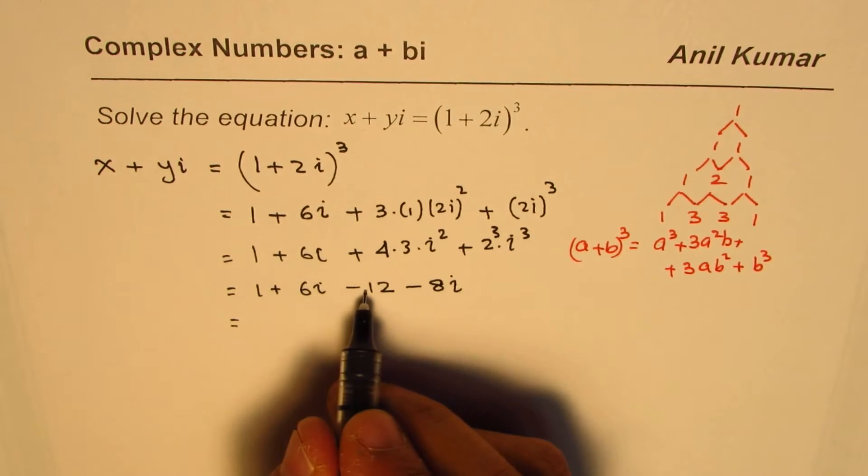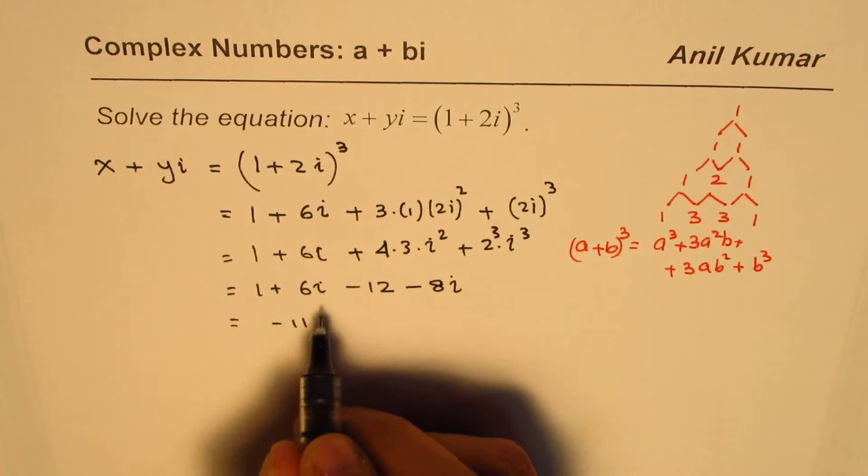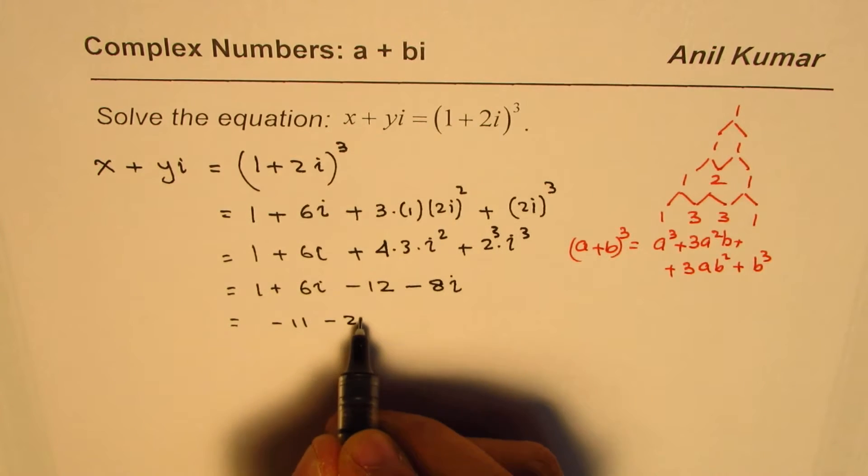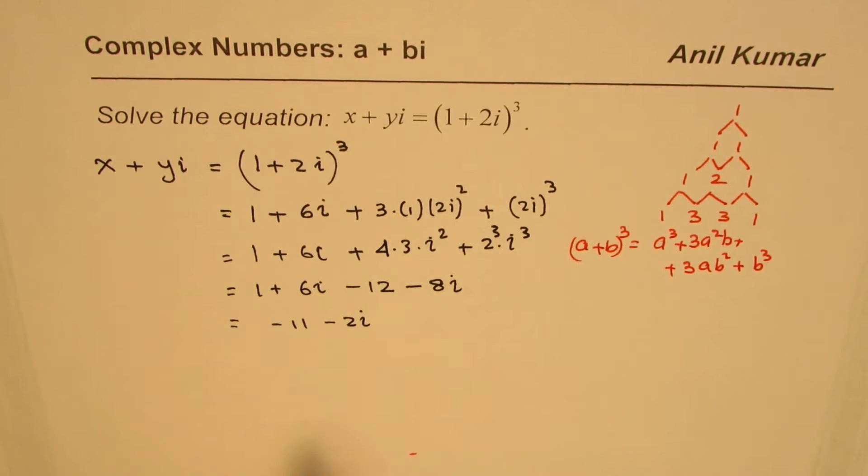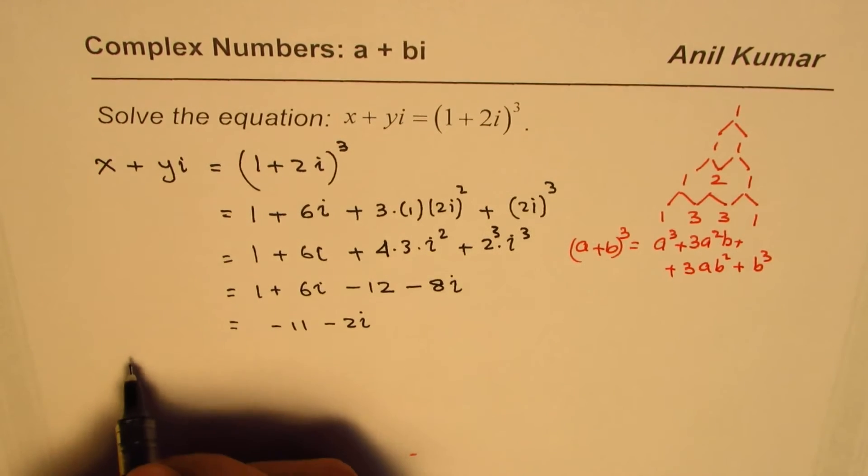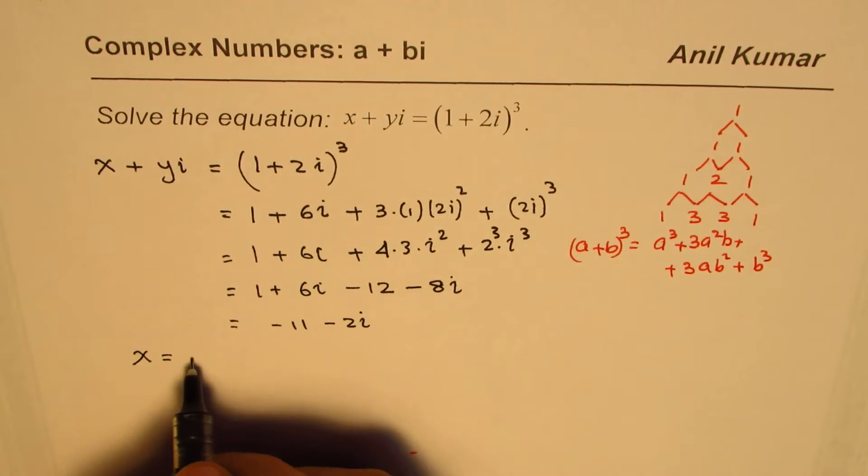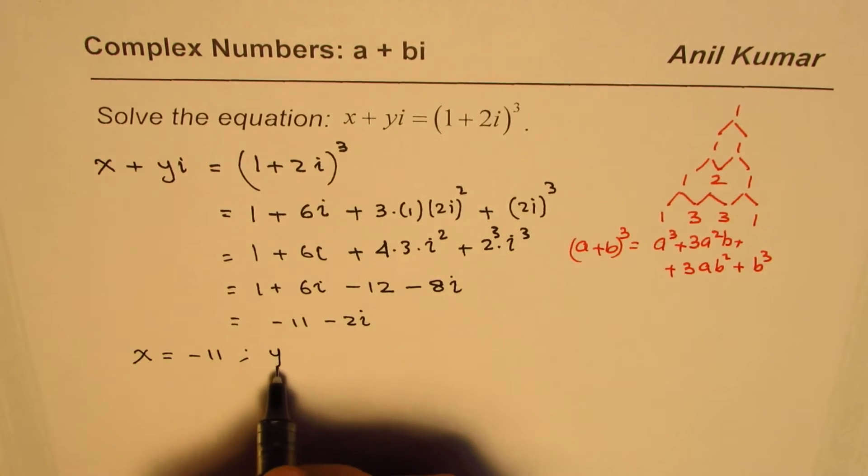Now we can combine the complex terms and the real terms. We get -11, 6i minus 8i is -2i, that is x plus yi. So in this particular case we know x equals -11 and y equals -2.